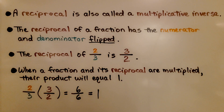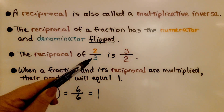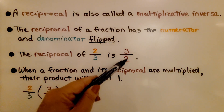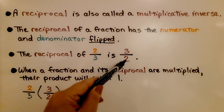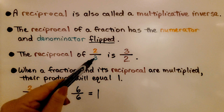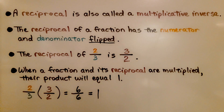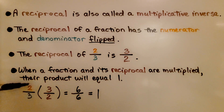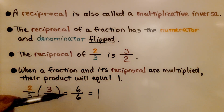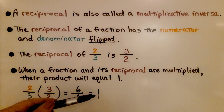A reciprocal is also called a multiplicative inverse. The reciprocal of a fraction has the numerator and denominator flipped — so the reciprocal of 2 thirds is 3 halves. The numerator becomes the denominator and the denominator becomes the numerator. When a fraction and its reciprocal are multiplied, their product equals 1. If we multiply 2 thirds by its reciprocal 3 halves, we get 6 over 6, which equals 1.